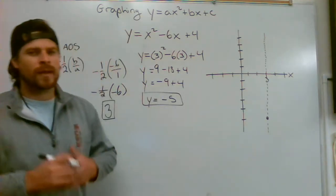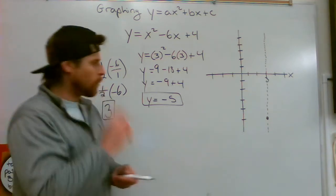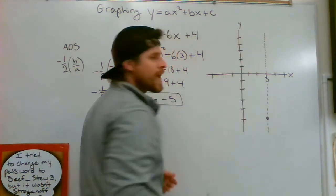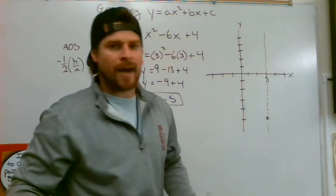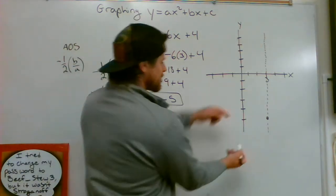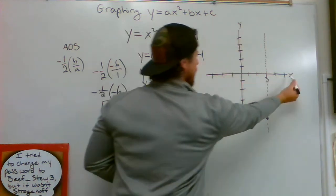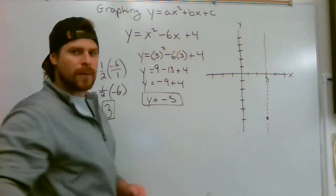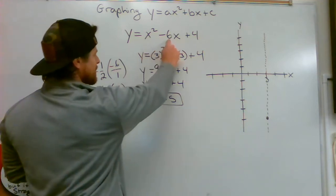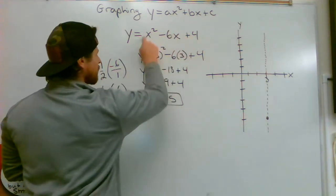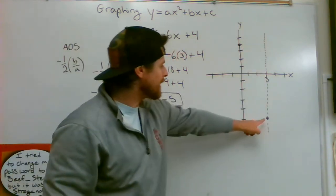Next I want to figure out where the y-intercept of my parabola is. The y-intercept is right here on the y-axis. We can find that by plugging in x equals 0. When we put a 0 in, a lot of things just change to 0. 0 squared is 0, minus 6 times 0 is 0, so all of that is just worth 0. All we have left is plus 4. So I'm going to mark the point at y equals 4 on the y-axis.